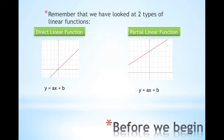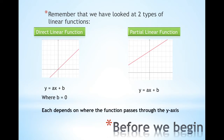Both of them share this rule, but in this case the direct linear function has a B that's equal to zero because it passes through the origin. Each function depends on where the function passes through the y-axis. This one passes through zero so it's direct. This one passes through something other than zero so it's partial.